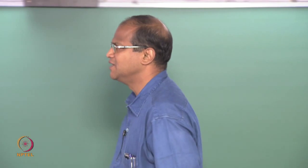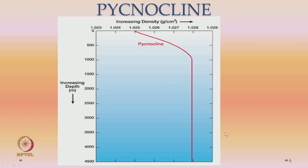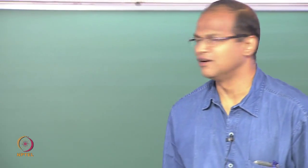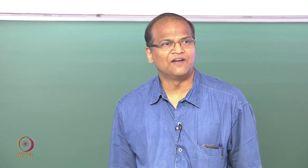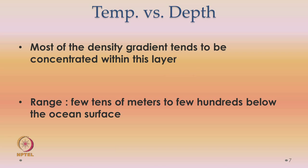The density of sea water is a function of temperature, salinity, and pressure. The density changes with depth: there is a region where it rapidly increases, called the Pycnocline — spanning maybe 500 to 1000 meters — after which it remains roughly constant. Most of the density gradient is concentrated within this Pycnocline, which can range from a few tens of meters to a few hundred meters below the ocean surface.